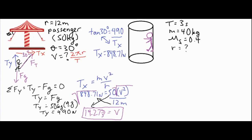The key steps for this problem: draw a force diagram to analyze forces in the x and y directions. In the y direction, Fg is easy to solve for given the mass, and it gives you part of the triangle. Then use Tx — the centripetal force pointing toward the center of the circle — found using trig. Set Tx equal to mv squared over r, do some algebra, and you get a velocity of 14.27 meters per second.